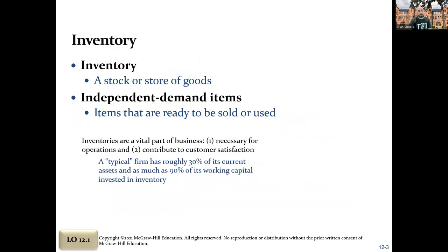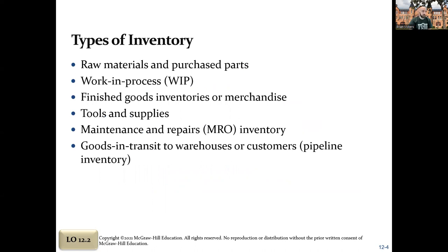To learn about inventory, we need to define it: inventory is a stock or store of goods. Independent demand items are items that are ready to be sold or used right away. Inventory doesn't just mean final goods on a retail store shelf. It can include raw materials, purchased parts, work-in-process inventory — stuff in the process of being built, especially in a custom job shop — finished goods or merchandise ready to be sold, and tools and supplies.